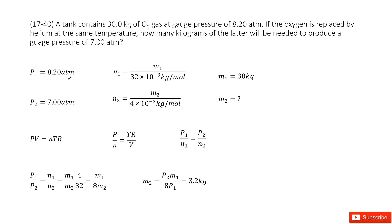The problem tells us the oxygen is replaced by helium gas at the same temperature. The new pressure is 7 atm, and we need to find the mass of the helium gas. So P2 is given as 7 atm.